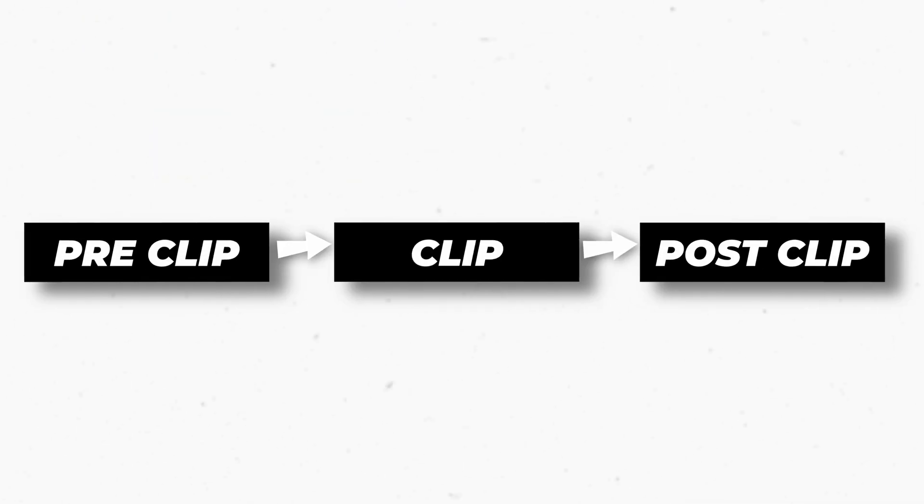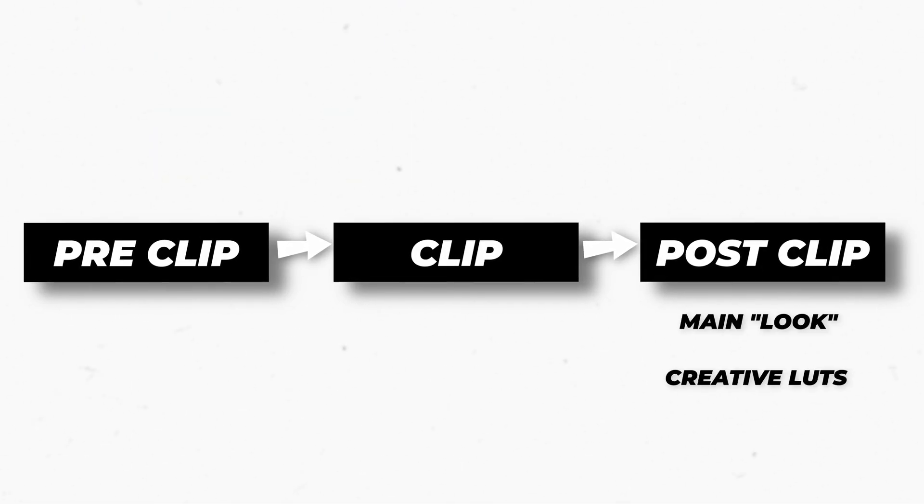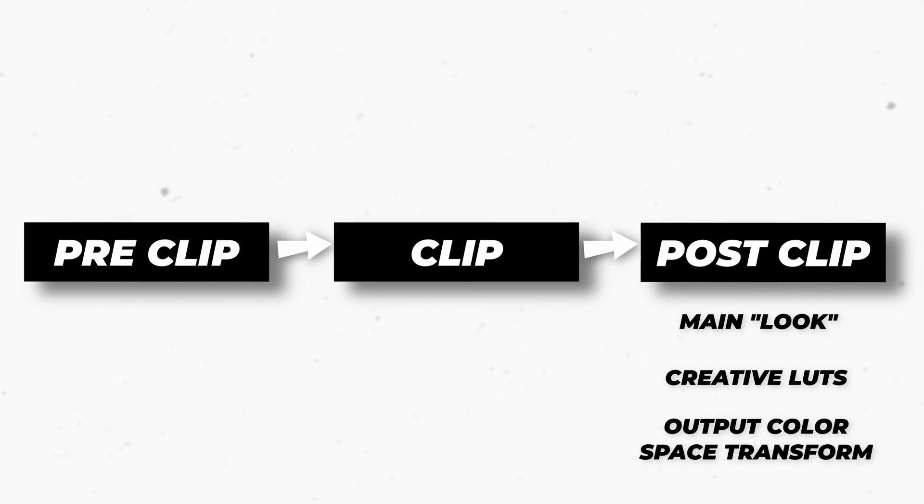So anything that you did in that group pre-clip area is now being fed into this grading area. The third section is group post-clip. This also applies any grading to the entire group, but it applies it after the clip grading. So anything that you do at the clip level will affect the input of whatever you do here. This is typically where you could apply your main look or creative LUT, as well as your final output color space transform. And that's what groups do and what they allow you to do.